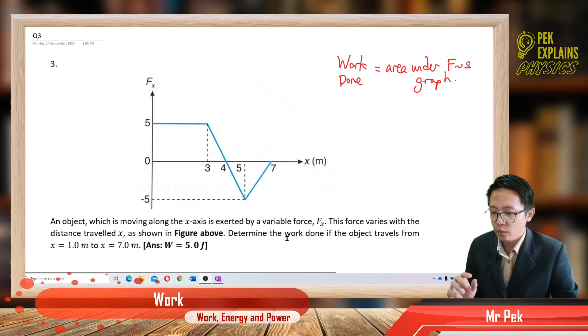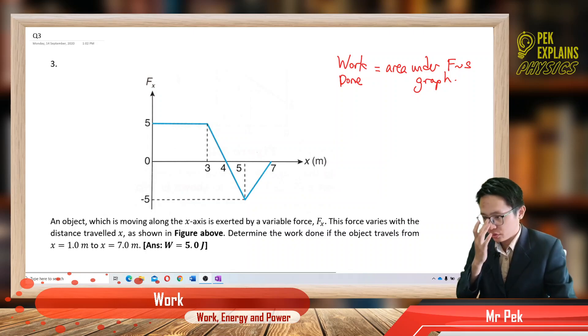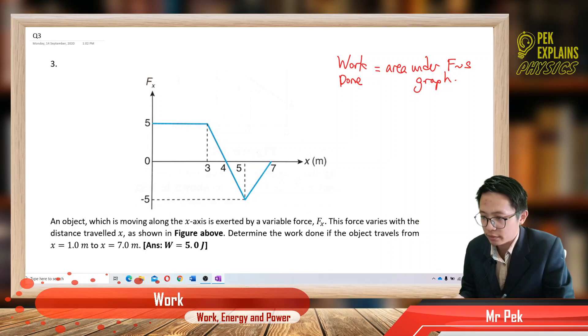So we want to find the work done from 1 to 7 meter. So where is 1 meter? Let us try it out. So 1 meter is around here, so we just want from 1 meter from 1 to 7 meter, starting from here.